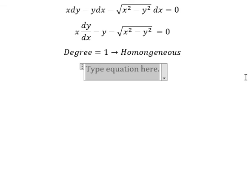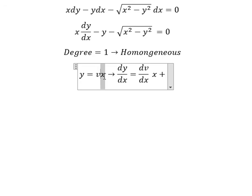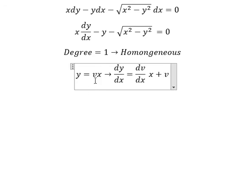We use the substitution y equals vx. Taking the first derivative of both sides using the product rule, we get dv/dx multiplied by x plus v.